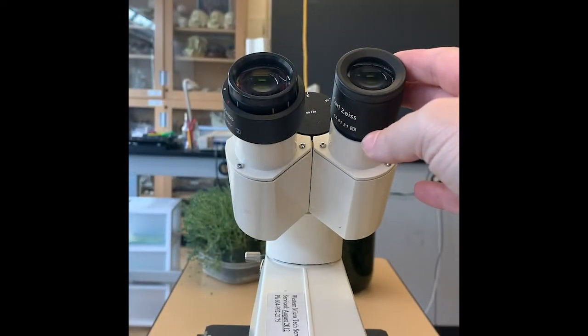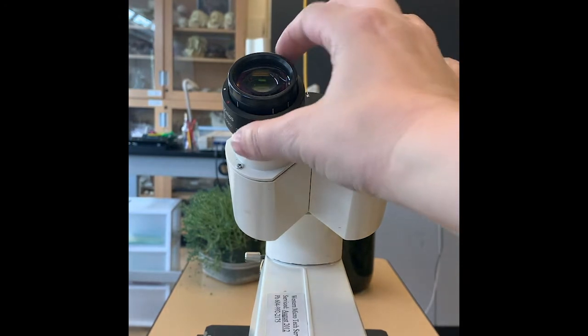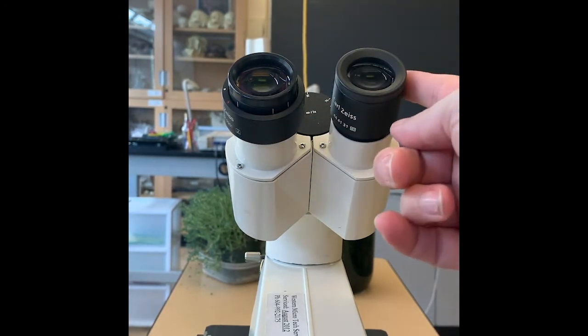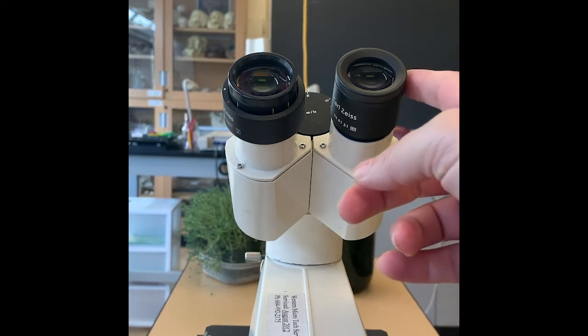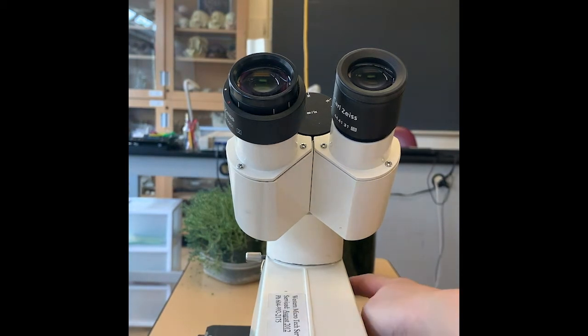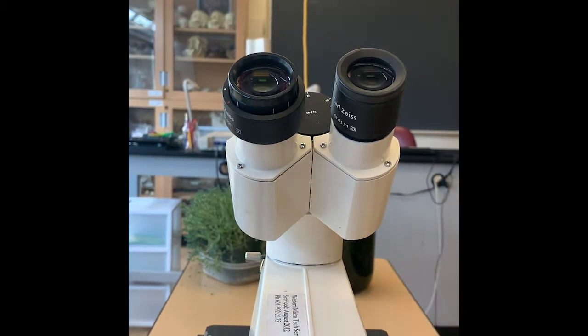Here we have the ocular lenses. This is the part that you look through when you're looking at your specimen. These lenses give you an additional 10x magnification. This is why the magnification shown on our objective lenses is actually 10x the value we see there.